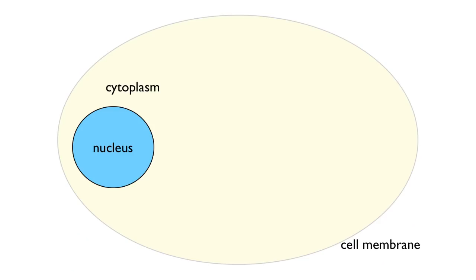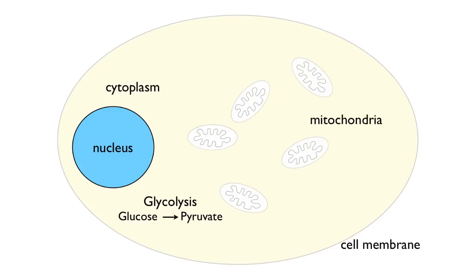Here's the big picture. In our cells, we extract energy from carbohydrates through a series of reactions beginning with glycolysis. Glycolysis occurs in the cell cytoplasm and involves nine steps which break glucose — a six-carbon sugar — into two molecules of pyruvate or pyruvic acid, which are three carbons each. Those molecules of pyruvate will go into the mitochondria, which are like the energy transformers of the cell.